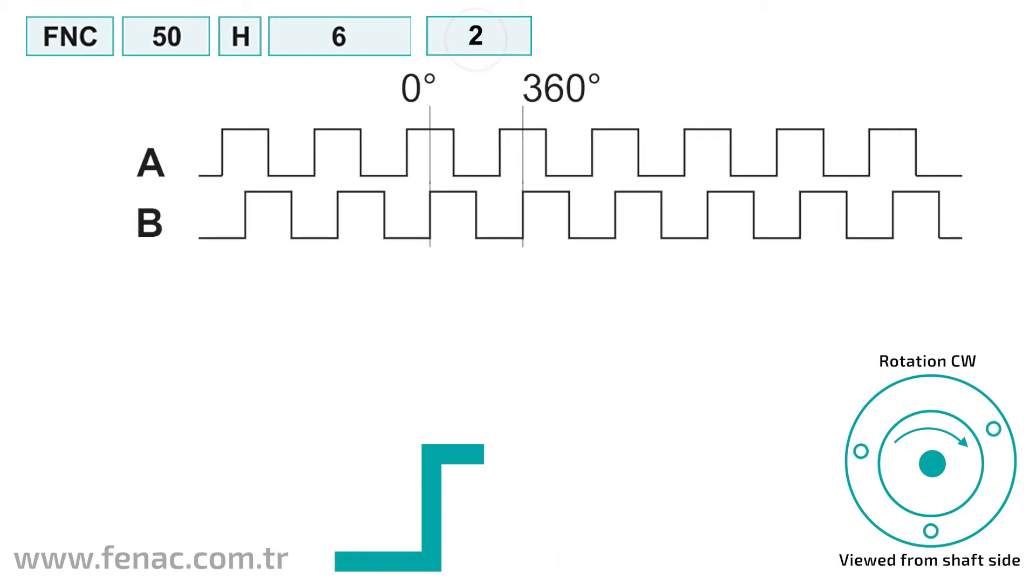If you want to determine the direction, A and B signals are used together. There is a 90-degree phase difference between the A and B signals. Direction can be determined from this phase difference. Also known as the quadrature encoder interface, the quadrature exchange between two signals helps you increase the resolution by four times.